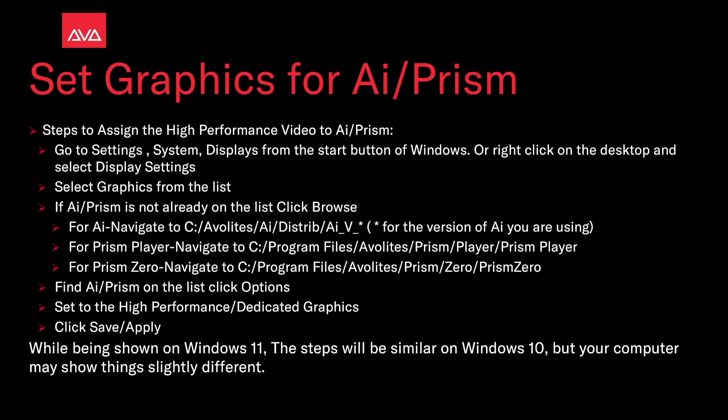Select Graphics from the list. If AI or Prism is not already on the list, click Browse. For AI, navigate to C drive > Avalites > AI > distrib, then AI underscore V underscore and the version of AI you're using — in this case version 12.